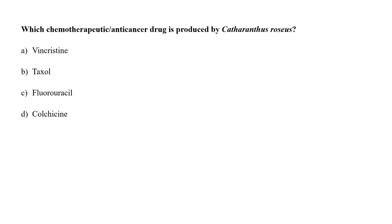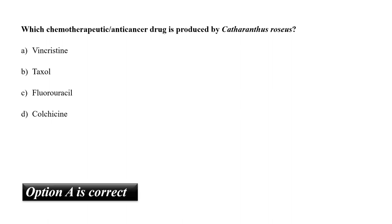Which chemotherapeutic or anti-cancer drug is produced by Catharanthus roseus? A. Vincristine, B. Taxol, C. Fluorouracil, or D. Colchicine? Taxol is from the plant Taxus. Fluorouracil is an analogue of pyrimidine nucleoside. Colchicine is from the autumn crocus and also from the plant Gloriosa superba. Vincristine is the only anti-cancer drug produced from Catharanthus roseus. So the correct answer is option A.